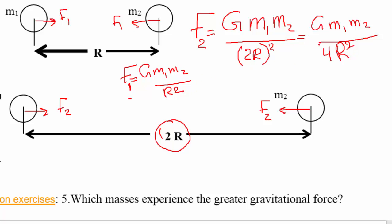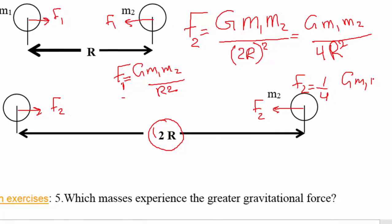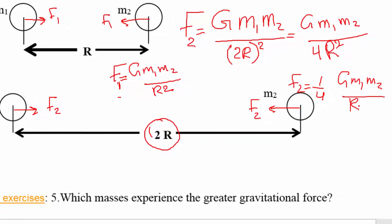So which one is bigger and by how much? f1 is bigger. Now f2 is multiplied by 1/4 — f2 equals (1/4) times G times m1 times m2 over r². So f2 is one-quarter the value of f1.